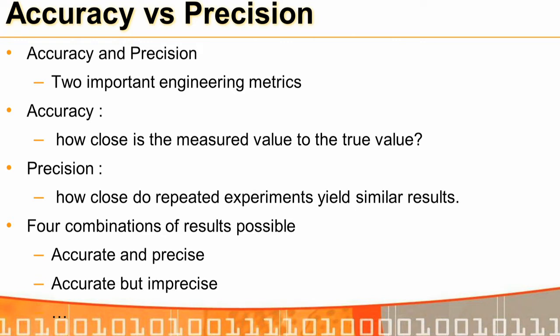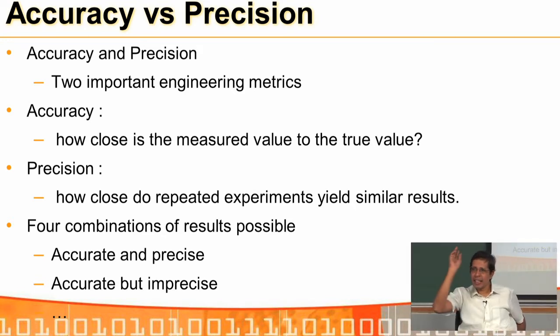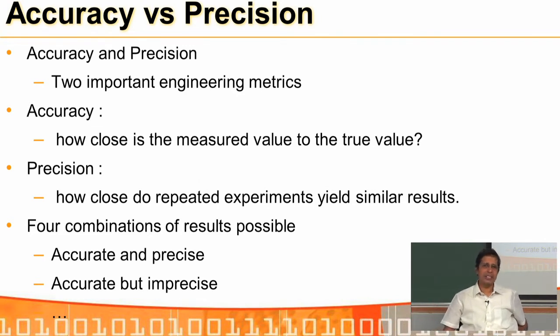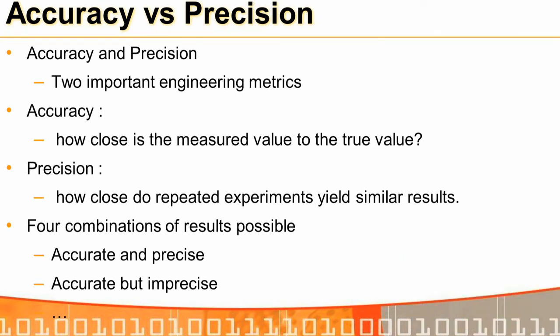We need both accuracy and precision. If I run a program n times, every time I want the same answer. If I run a program on machine 1 and machine 2, I need the same answer — that is a precise computing environment. How close that answer is to the actual value is accuracy.